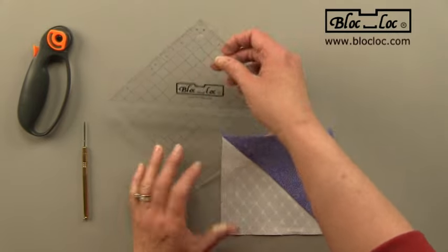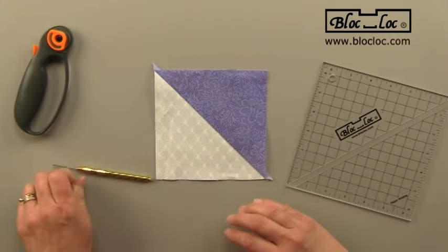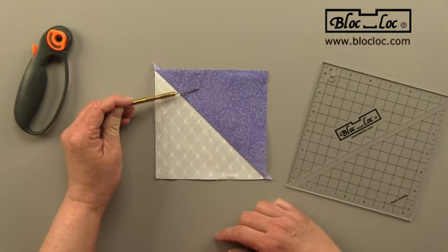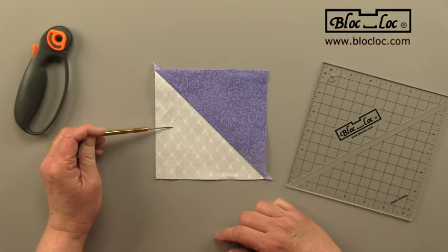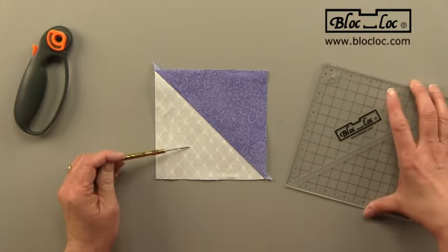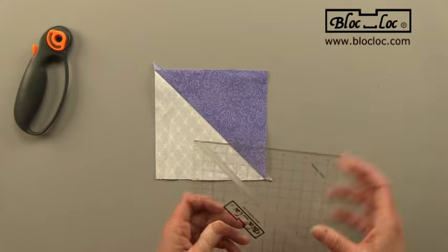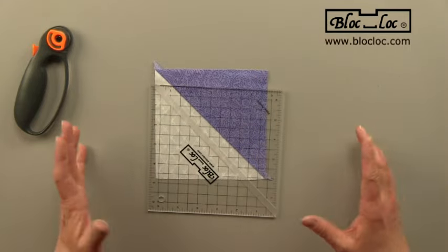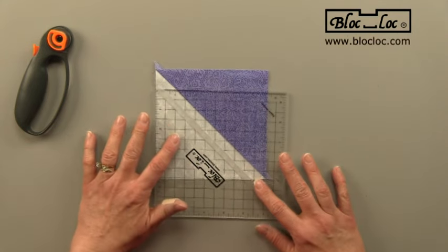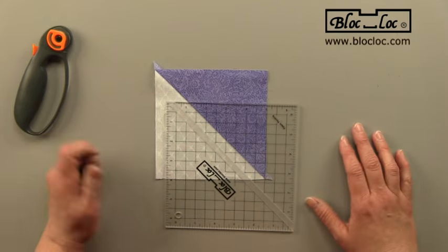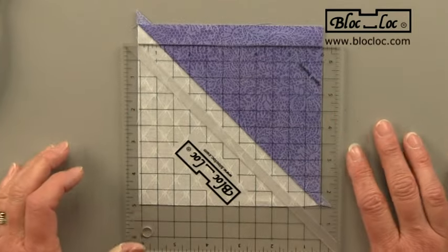Let me move this out of the way. When you have pressed your seam to one side, the side where the seam is becomes your high side and the side where there is no seam becomes your low side. And this is really important because when this is right side up and Block Lock is placed on the half square triangle, the logo Block Lock has to go on the side of your unit where there is no seam. In other words, the logo goes on the low side.